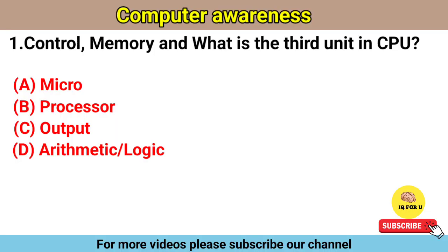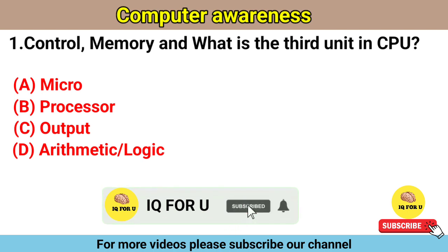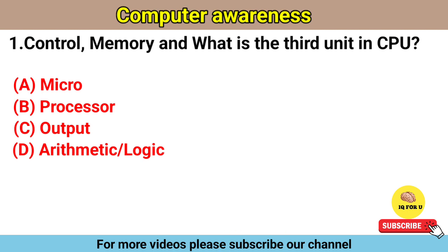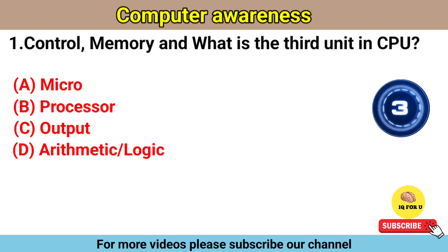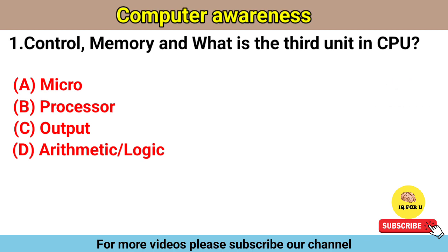Hi friends, welcome to my channel. Today's class is about computer awareness questions. Let's start. What is the third unit of CPU? Option A: Micro, Option B: Processor, Option C: Output, Option D: Arithmetic Logic Unit. The right answer is Option D: Arithmetic and Logic Unit.